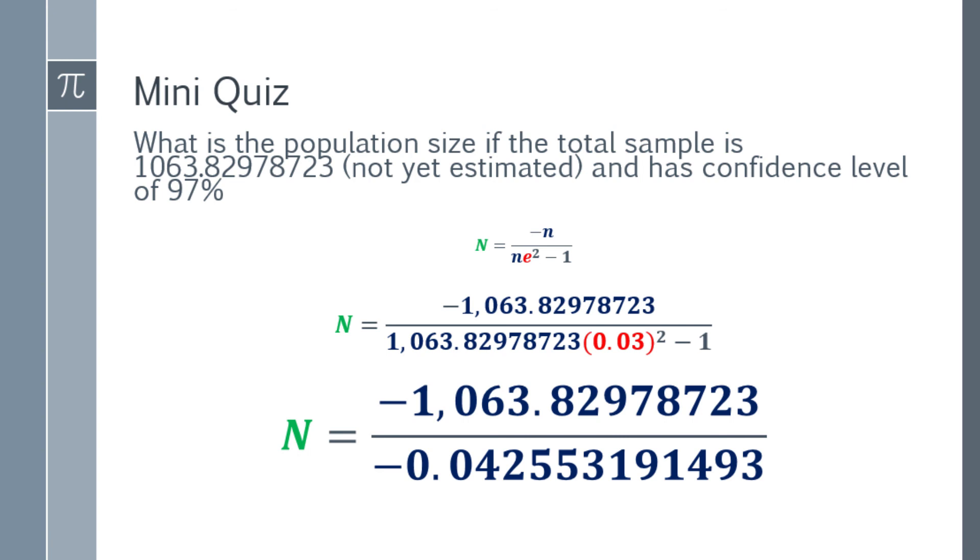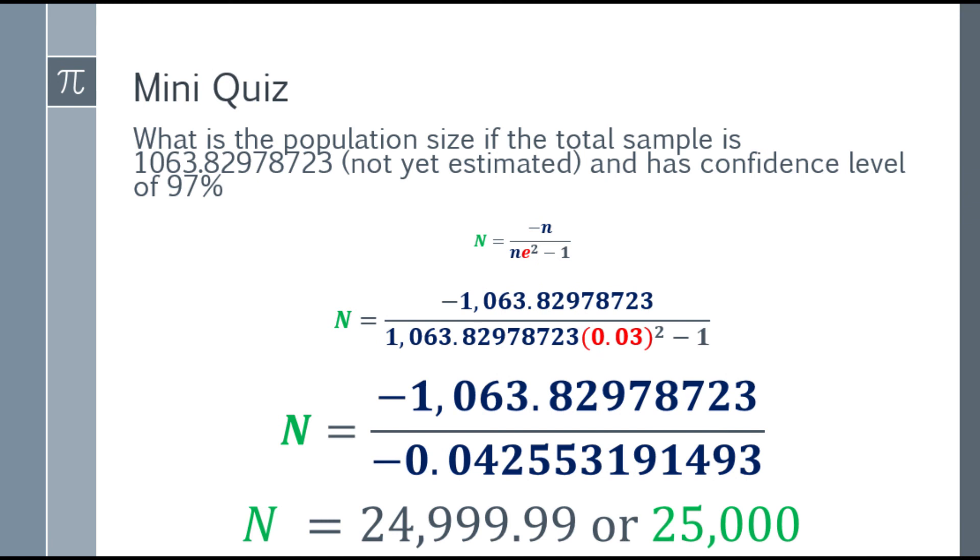Now, to get the final answer for the population, both are negative, so it will become positive. The answer will be 24,999.99, or 25,000. So for the question, what is the population size if the total sample is 1,063.829 and so on, not yet estimated, and has confidence level of 97%, the answer will be 25,000.